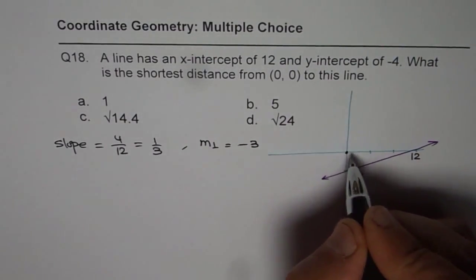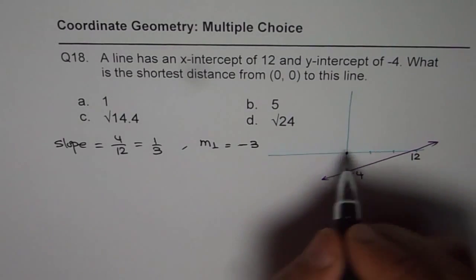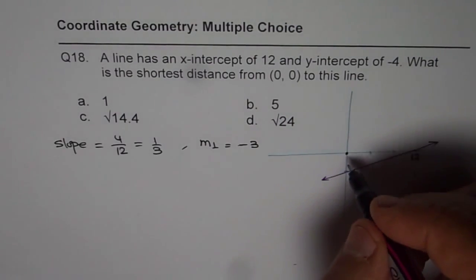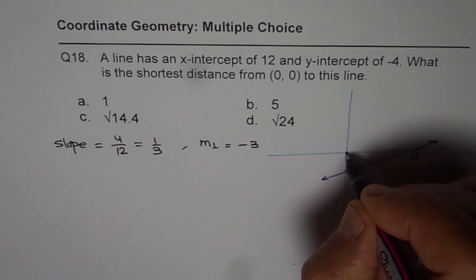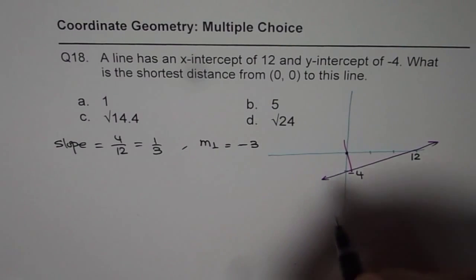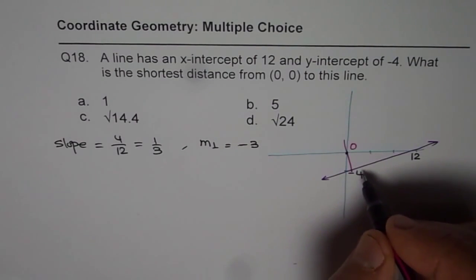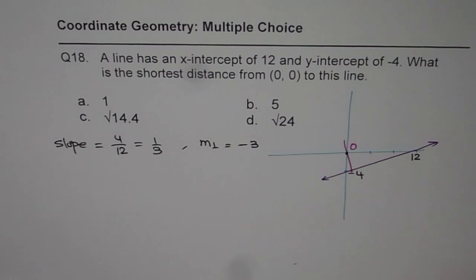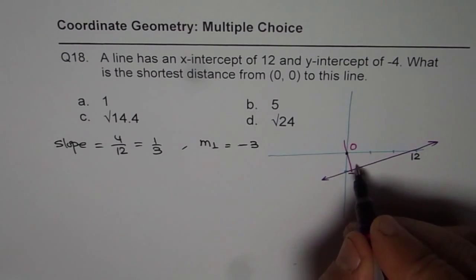Now we know it goes through origin. Therefore equation of the perpendicular should be, let's say this is the perpendicular. Then equation of this line going through O and intersecting somewhere at P on this. Let's say this intersects at point P.